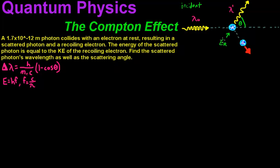The collision is at rest, resulting in a scattered photon — which is this right here. This little mark means scattered, and this means incident or initial photon wavelength. It results in a scattered photon and a recoiling electron, so this electron is going to shoot out. It was at rest, now it's got kinetic energy. The energy of the scattered photon is equal to the kinetic energy of the electron.